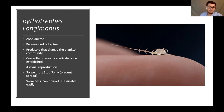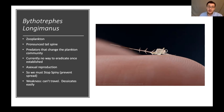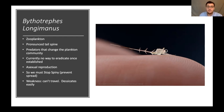Despite their small size, these guys are actually predators. When they get into a lake they start eating other zooplankton and really change the plankton community. There's currently no way to control or eradicate them once established, and they can reproduce both sexually and asexually, meaning they can divide very quickly when conditions are favorable and infestations can take off swiftly. Prevention is key. Their biggest weakness is that they can't travel on their own — they desiccate and die pretty easily when taken out of the water.